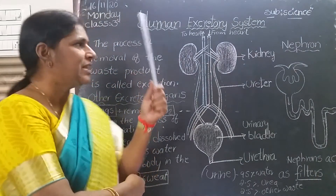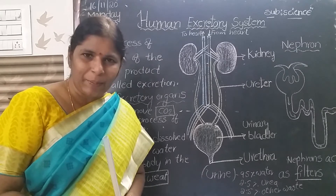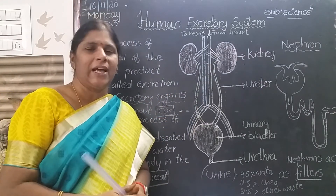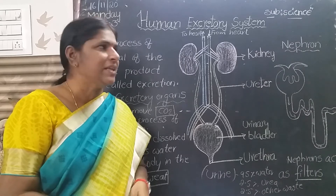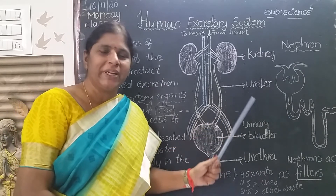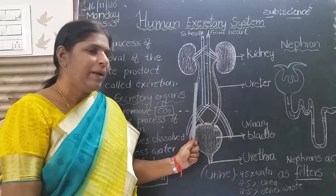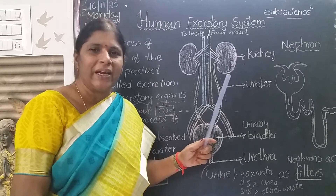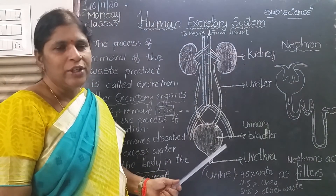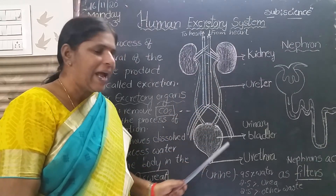What is called excretion? The process of removal of waste products is called excretion. Our excretory system consists of a pair of bean-shaped kidneys, a pair of ureters — these are narrow tube-like structures — a urinary bladder, and urethra.